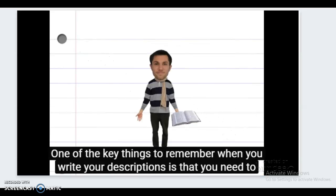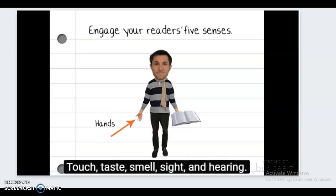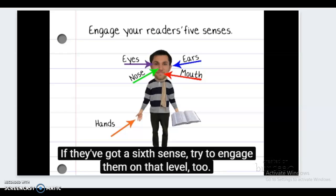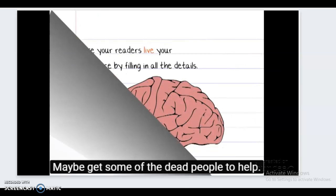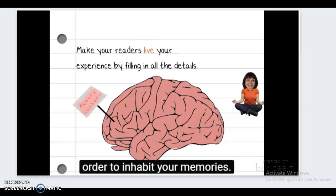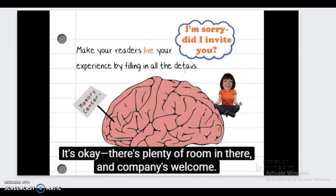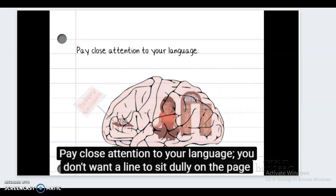One of the key things to remember when writing descriptions is that you need to engage your reader's five senses: touch, taste, smell, sight, and experience. Make your readers live your experience by filling in all the details they'll need in order to inhabit your memory. Pay close attention to your language — you don't want a line to sit dully on the page when a different word choice would really make a sentence pop.